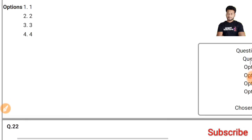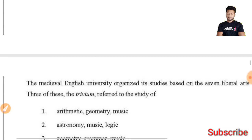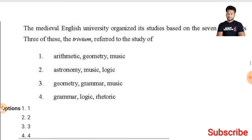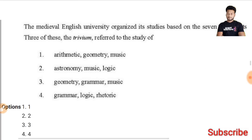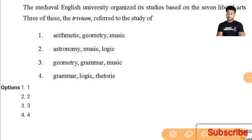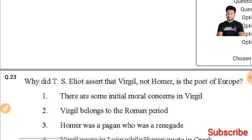Question 22: The medieval English university organized its studies based on the seven liberal arts. Three of these — the trivium — refer to the study of: grammar, logic, and rhetoric. The fourth option is the right answer.